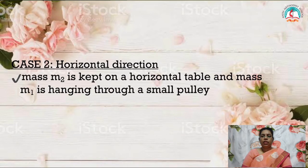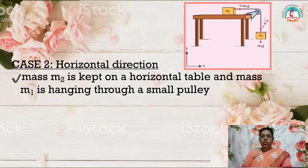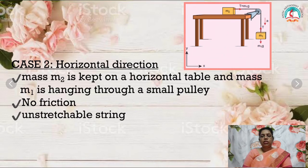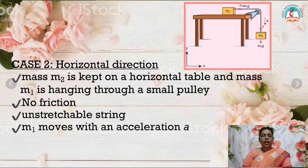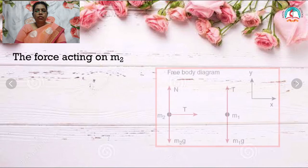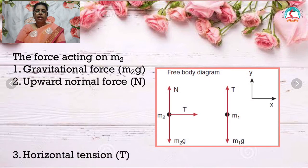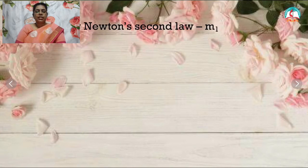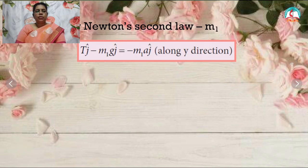Now let us see case 2: horizontal motion. In this case, mass M2 is placed on the horizontal surface and M1 is hanging with the help of a small pulley. Assume there is no friction acting on the surface. Both blocks are connected with an unstretchable string, and M1 moves with acceleration downward while M2 moves with the same acceleration horizontally. The forces acting on M2 are: gravitational force M2g, upward normal force N, and horizontal tension T. Forces on M1 are: gravitational force M1g and tension T acting upward.